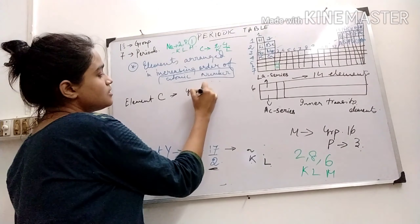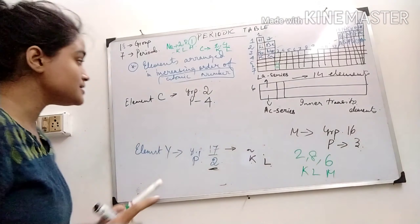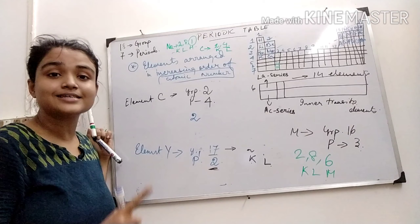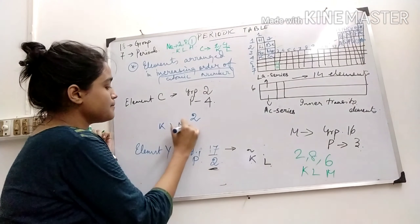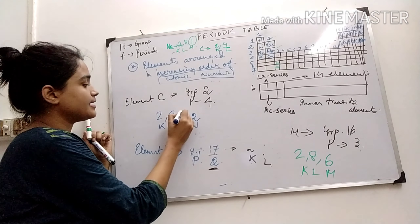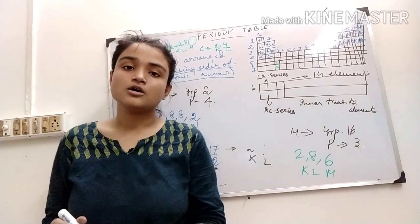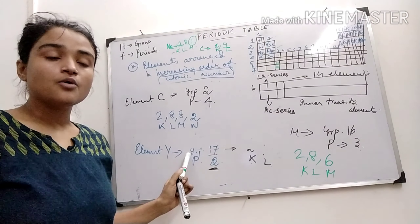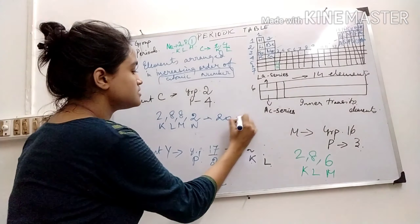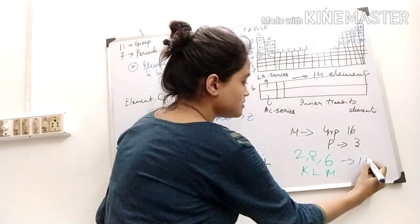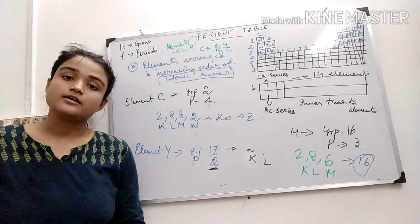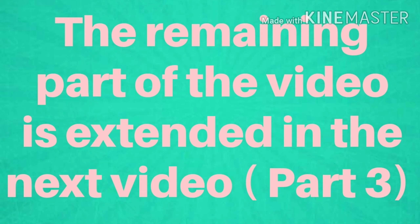Element C has group number 2, period 4. Group 2 means it has 2 electrons in its valence shell, and 4th period means it has 4 shells — K, L, M, N. So the configuration is 2, 8, 8, 2. This is how we determine the position of an element in the periodic table, or vice versa — the position is given and we determine the atomic number. The atomic number would be 10, 18, 20, or for this one it is 16. We can predict the atomic number from the given position, or determine the position from the electronic configuration.